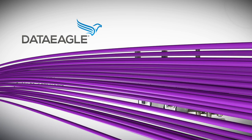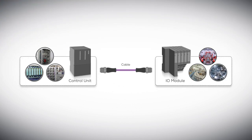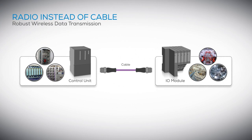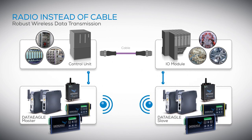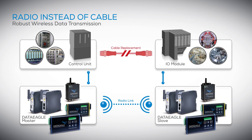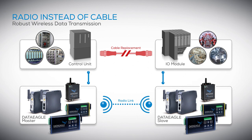Let's start. This is a classic cable connection between a control unit and an I/O module. You'll see a wireless connection, where the radio link connects via plug-and-play, replacing the usual cable connection. The DataEagle master is connected to the controller and the DataEagle slave to the I/O module. Multipoint connections are also possible.